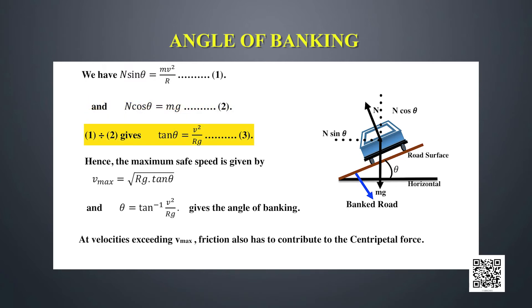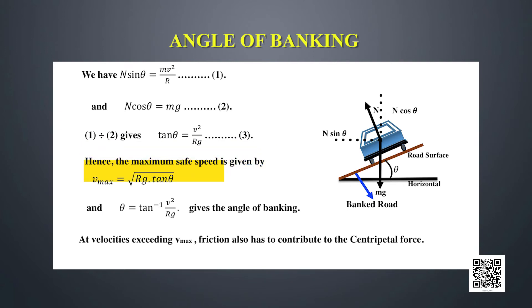Dividing these equations gives tanθ = v² / (r·g). Hence the maximum safe speed is v_max = √(r·g·tanθ), and the angle of banking for a particular speed v is given by θ = arctan(v² / (r·g)). This gives the angle of banking on a particular curved track for a maximum speed v.